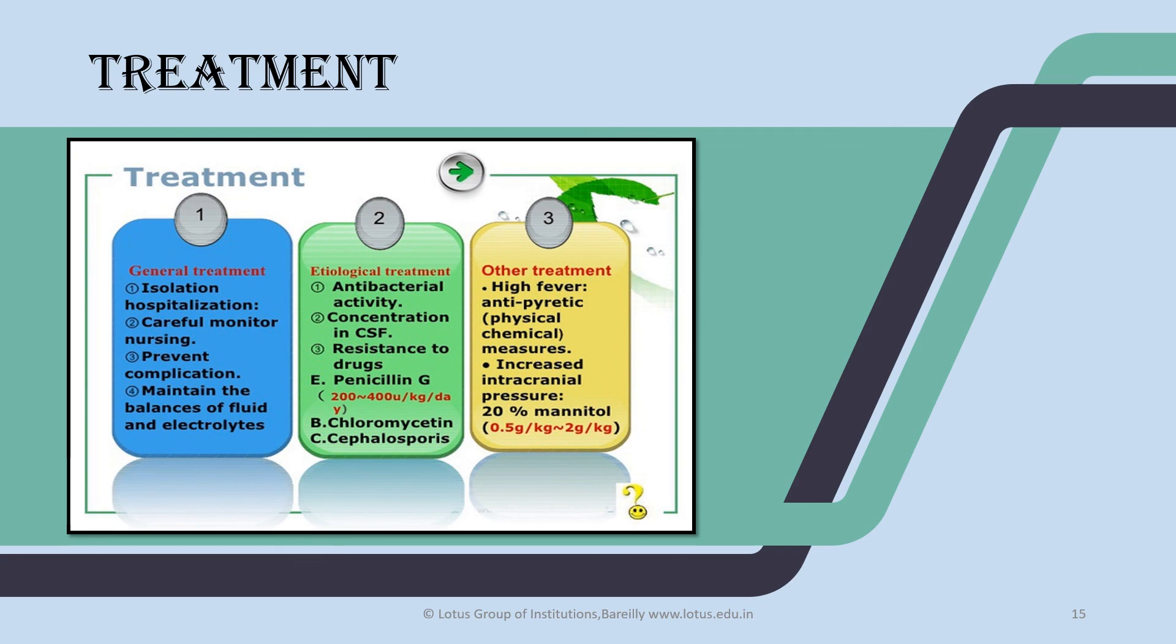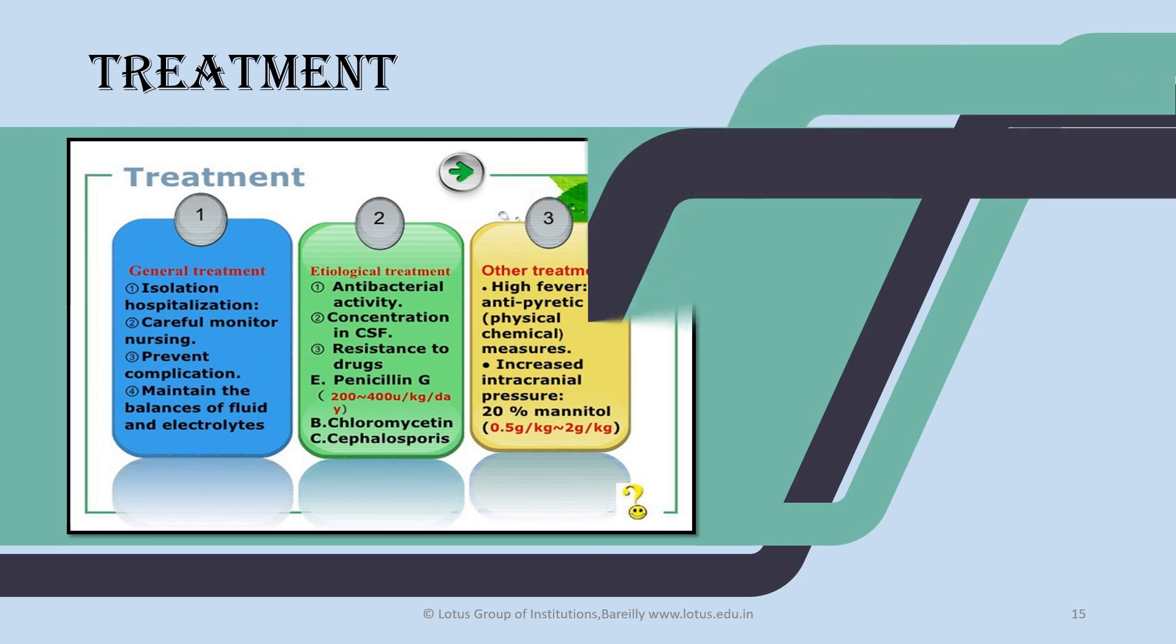Treatment: general treatment includes isolation, hospitalization, careful monitoring by nurses, maintaining electrolyte balance and fluid retention. For bacterial, viral, or fungal infection, isolation is needed. For bacterial infection, use fungicidal drugs like penicillin, cephalosporins, erythromycin. Commonly, we need to decrease intracranial pressure, administer electrolytes, and manage cerebral spinal pressure. This is our treatment strategy. Thank you.